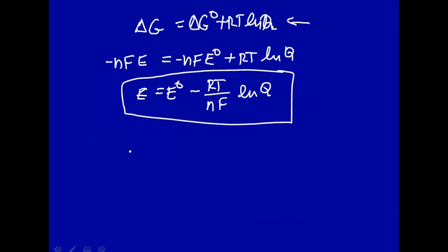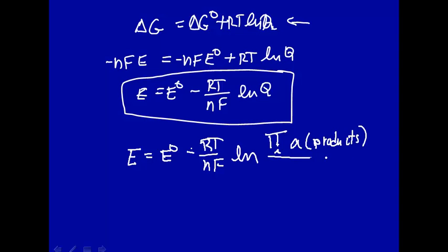Alright, so let's just write the Nernst equation here in terms of E equals E0 minus RT over nF times the natural log of the product of the activities of the products divided by the product of the activity of the reactants.